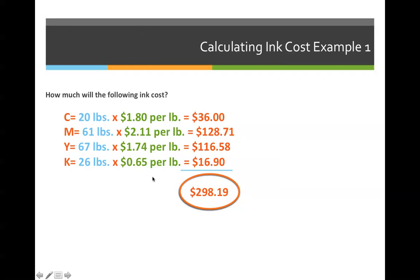Magenta will cost us $128.71, yellow will cost us $116.58, and black will cost us $16.90. Now, make sure that when you're doing your homework, if it asks you how much the total ink will cost, the answer would be $298.19. If it asks you for individual prices, you would have to list the individual answers.